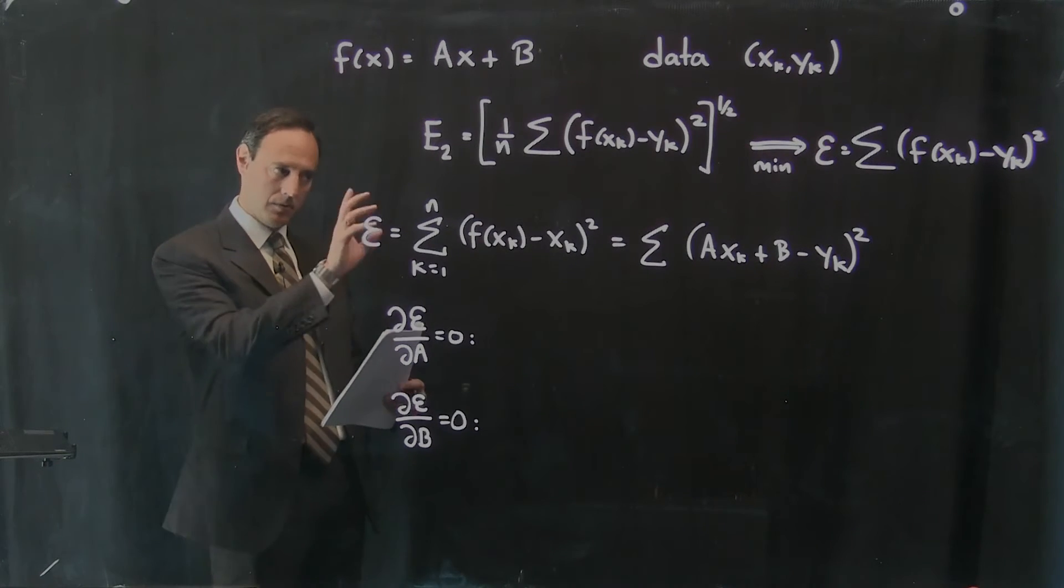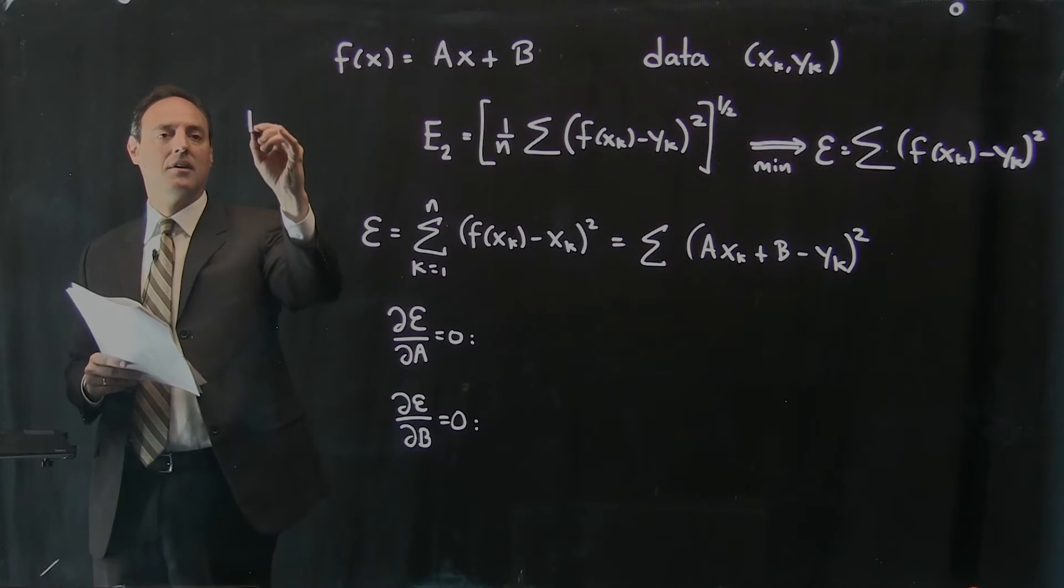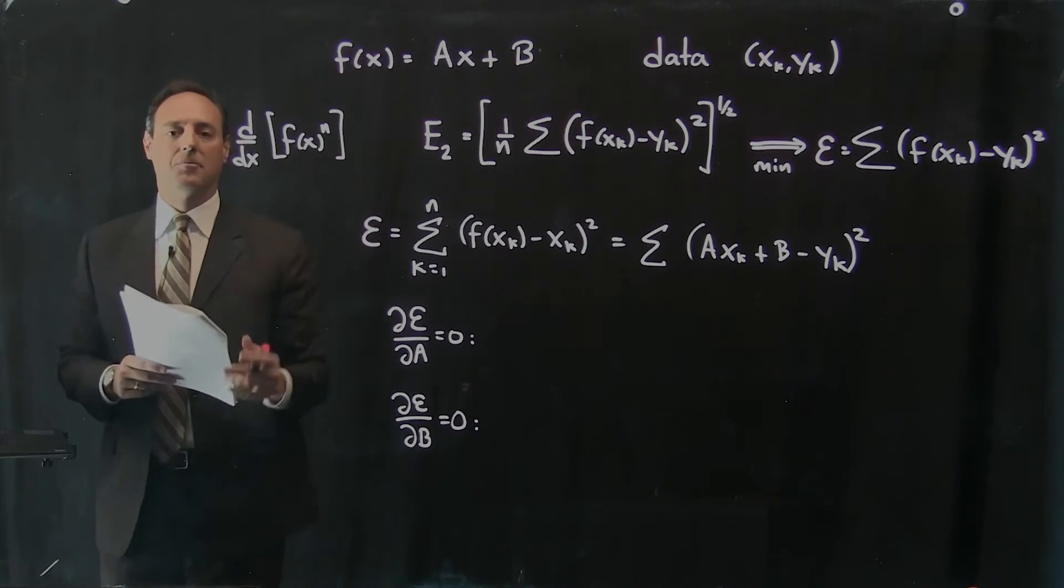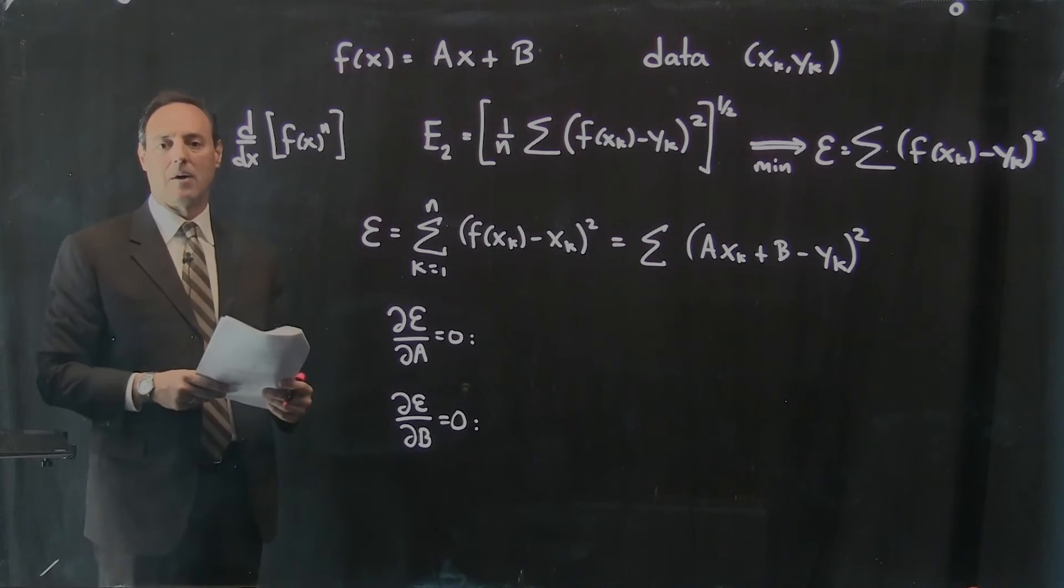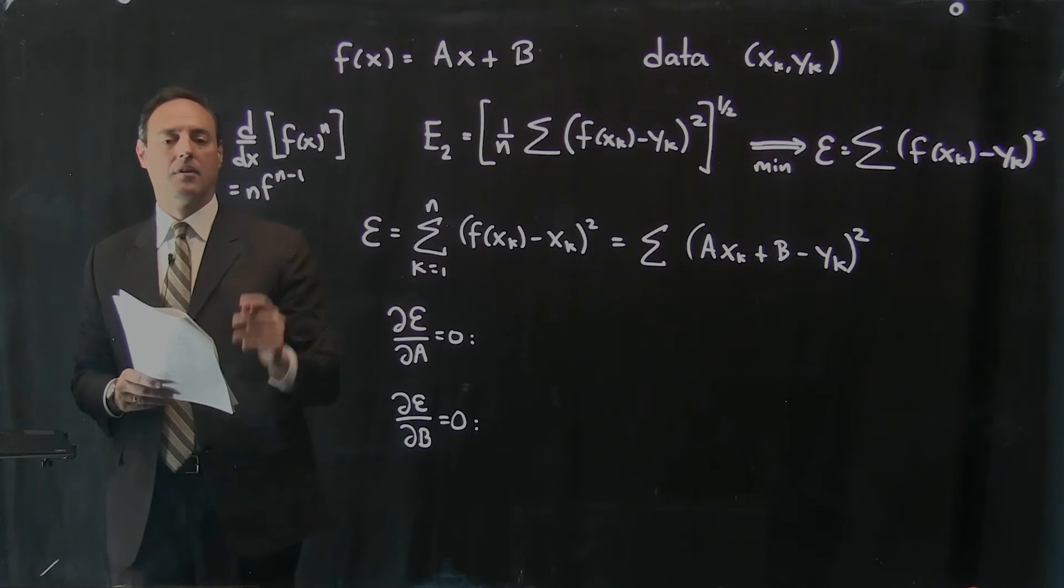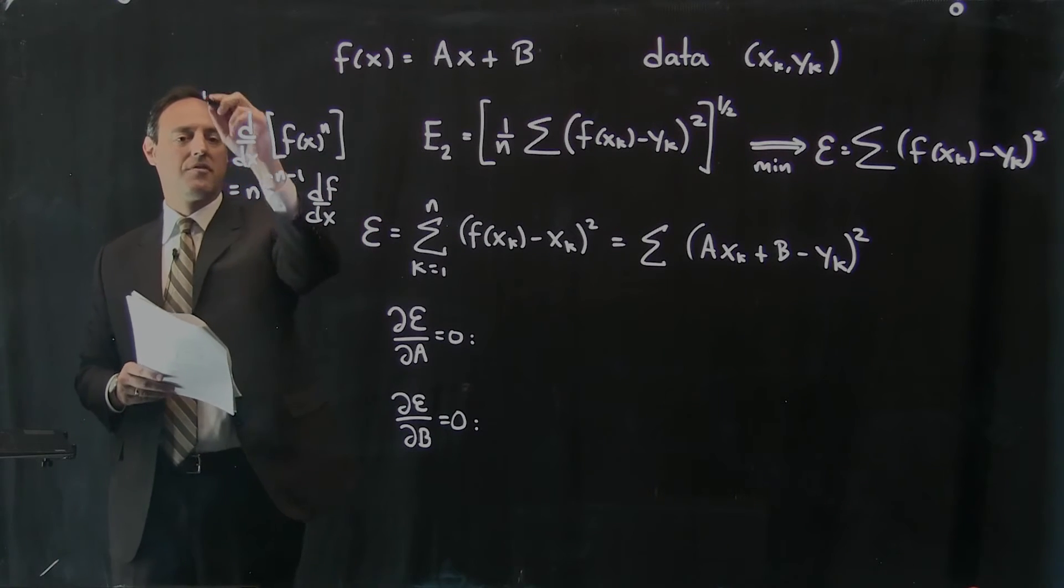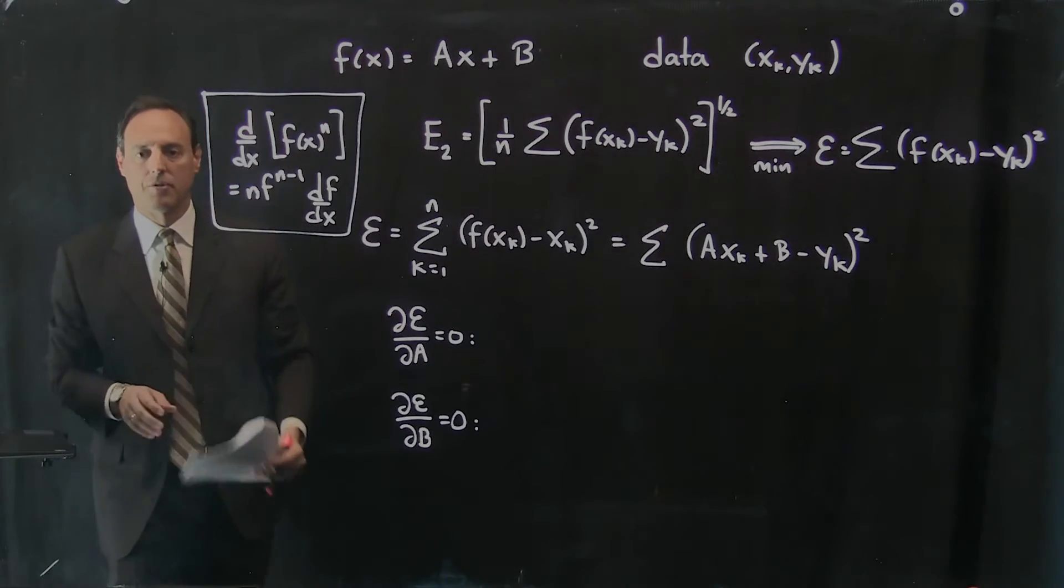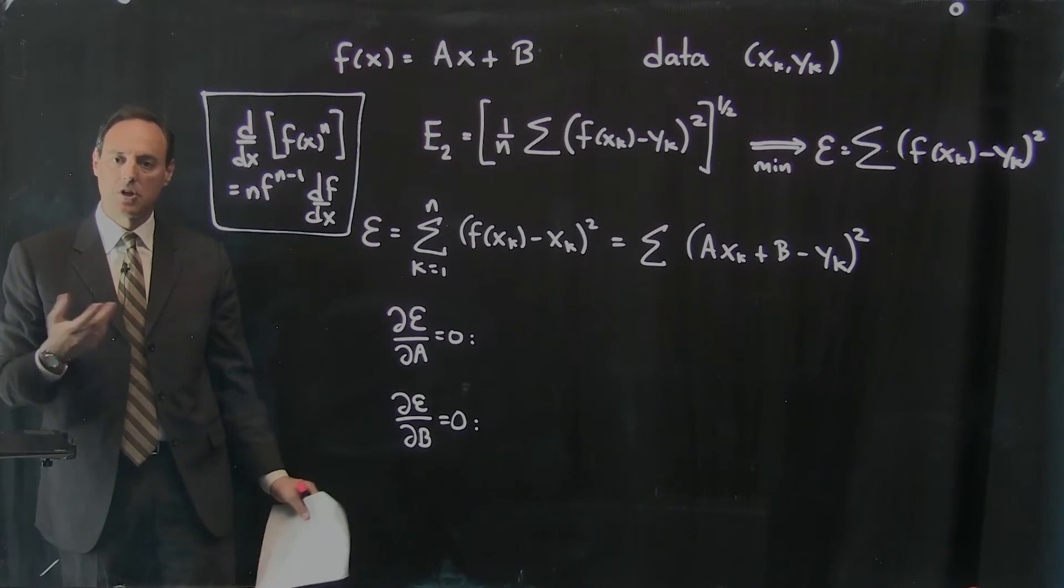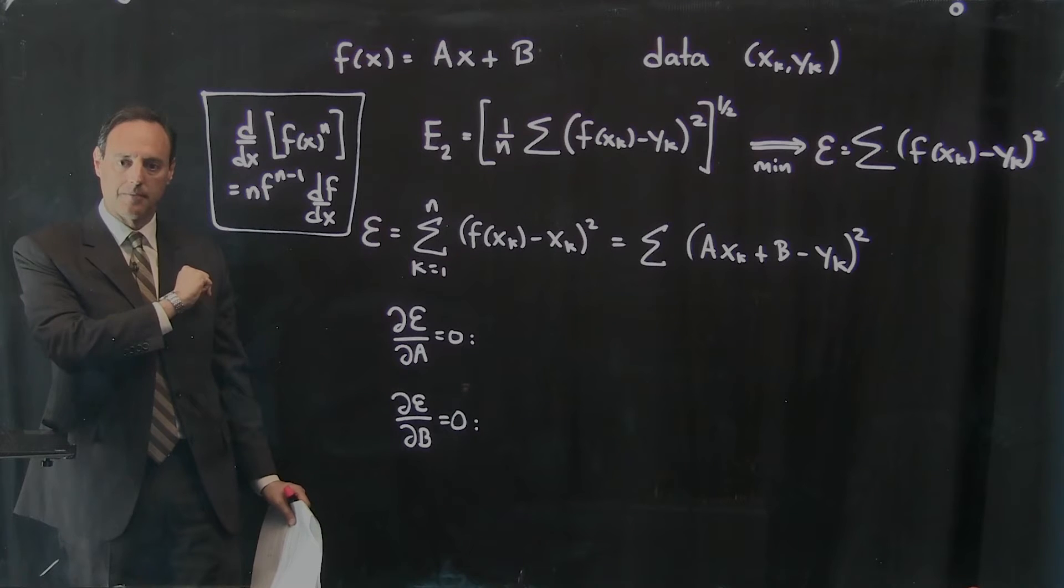And this leads us to two formulas. I'm going to think about taking the derivative of this formula with respect to A and setting it to zero. Take the derivative of the formula with respect to B and setting it equal to zero. This is a very simple derivative formula we're going to apply.